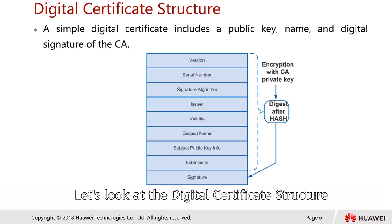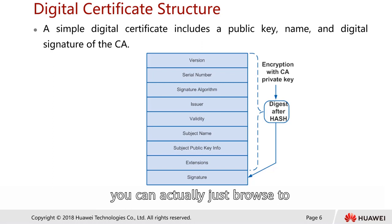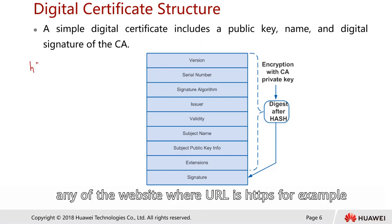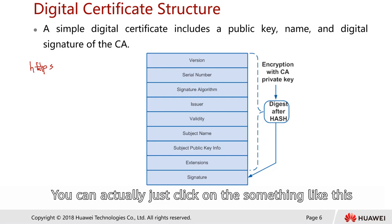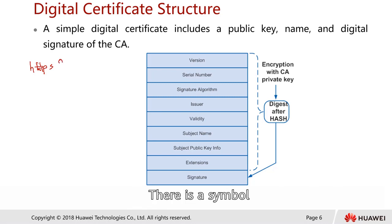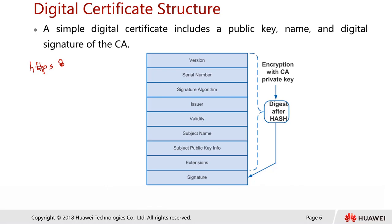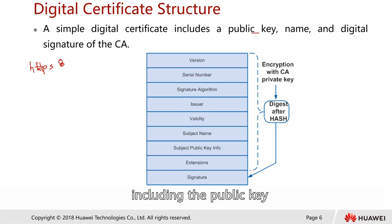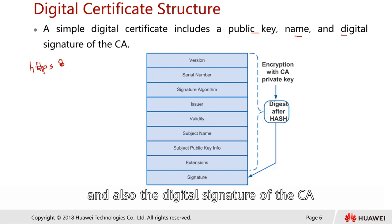Let's look at the digital certificate structure. If you're interested in viewing a real one, you can browse to any website where the URL shows HTTPS — for example in Google Chrome, click on the lock symbol. You can then view the digital certificate online. A typical digital certificate includes the public key, the subject name, and also the digital signature of a CA.